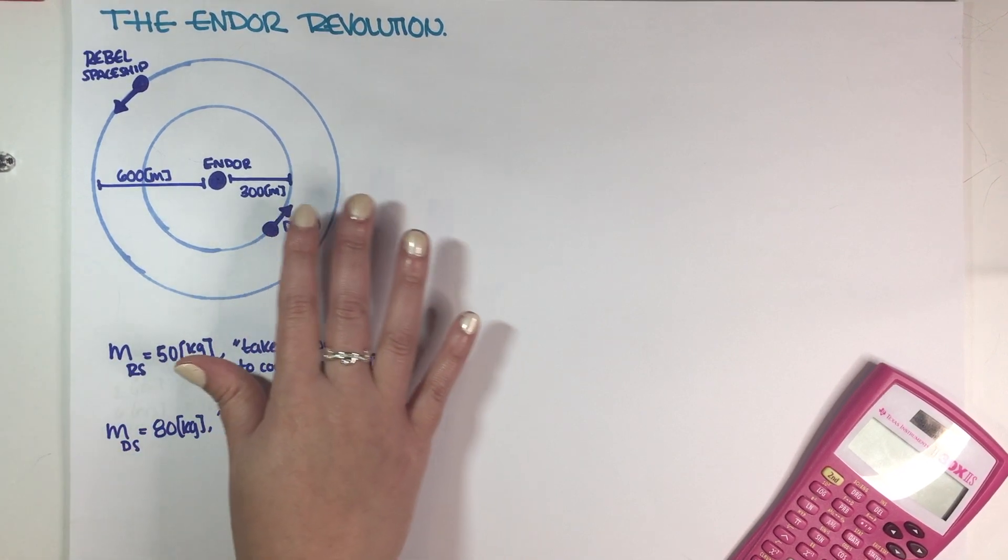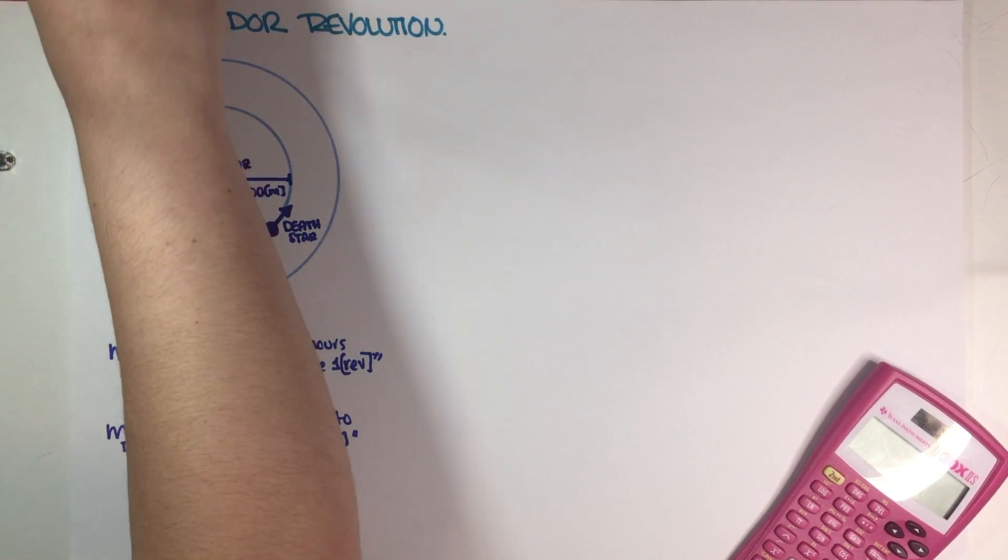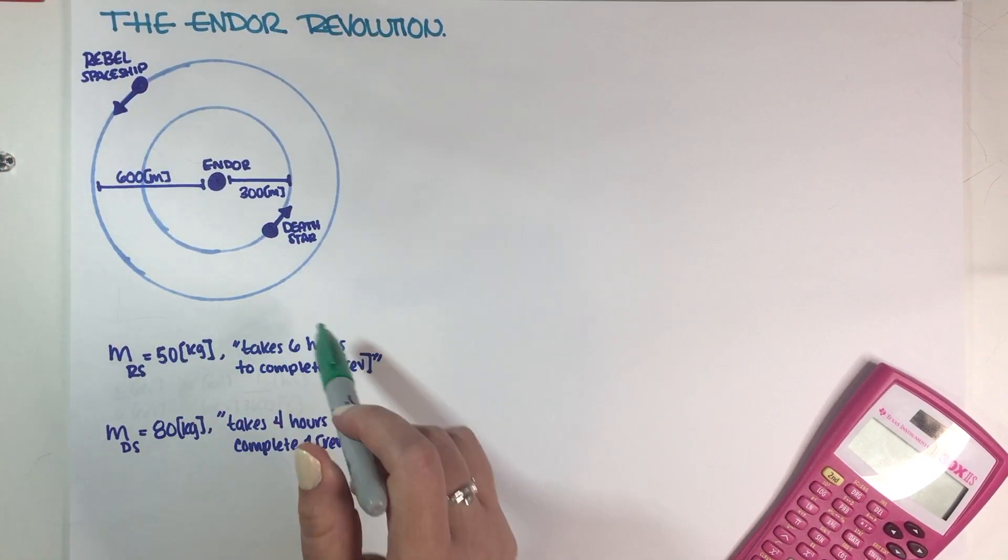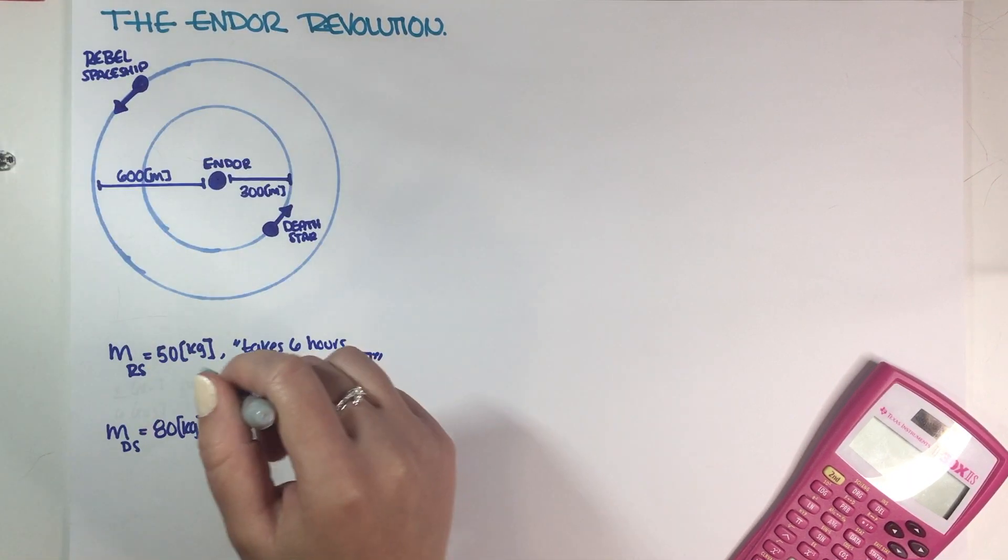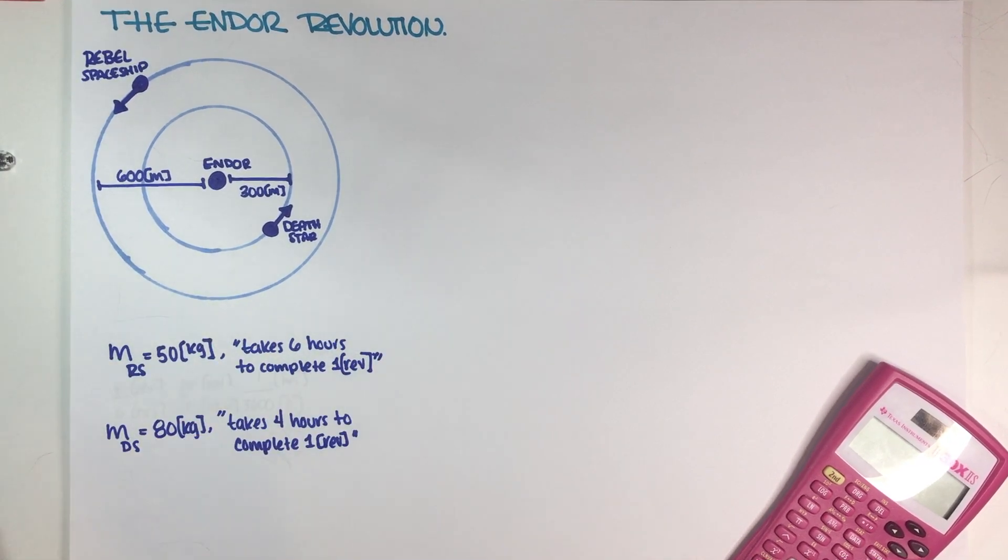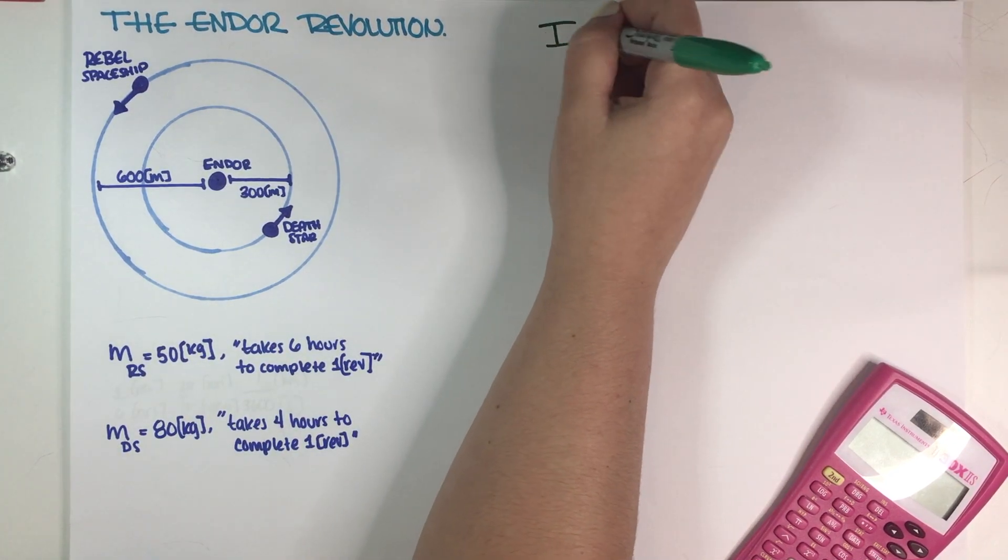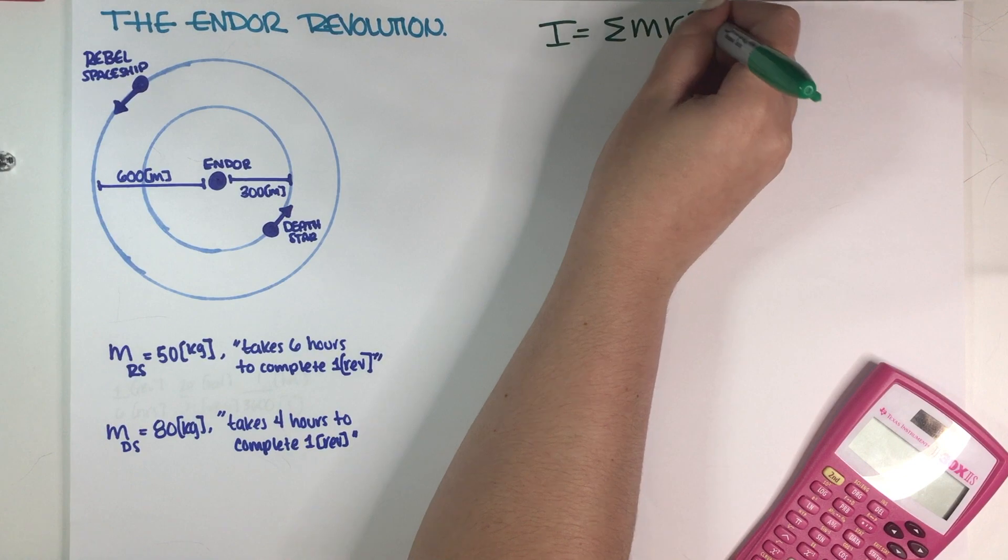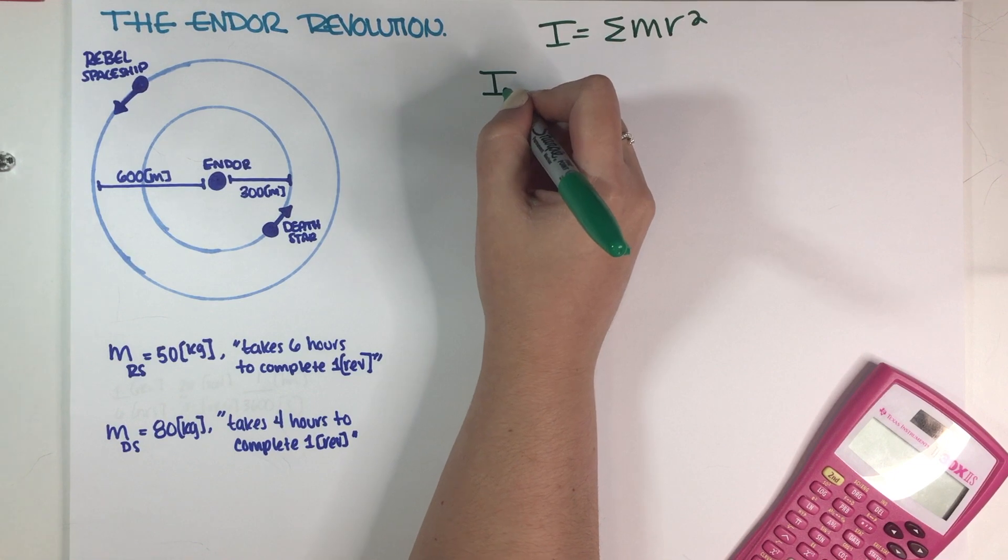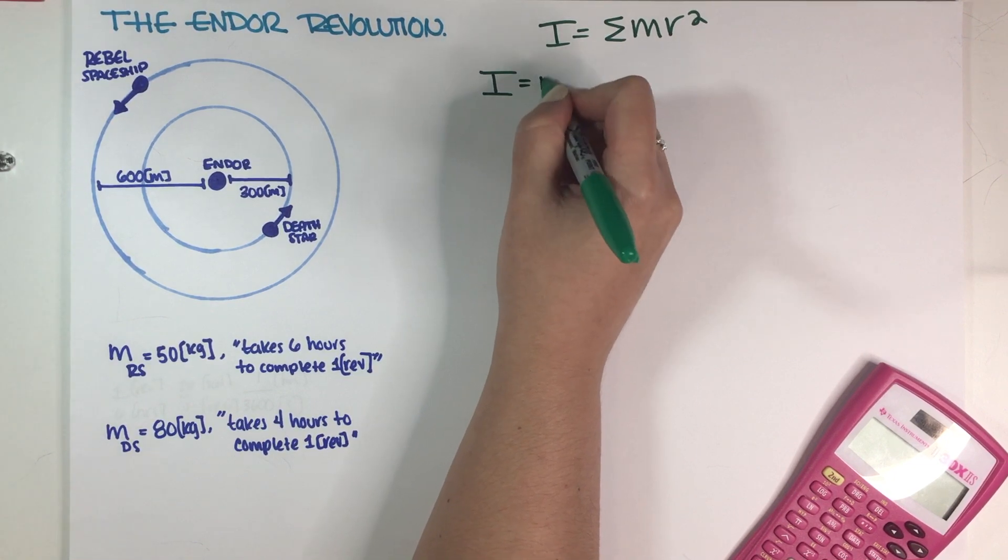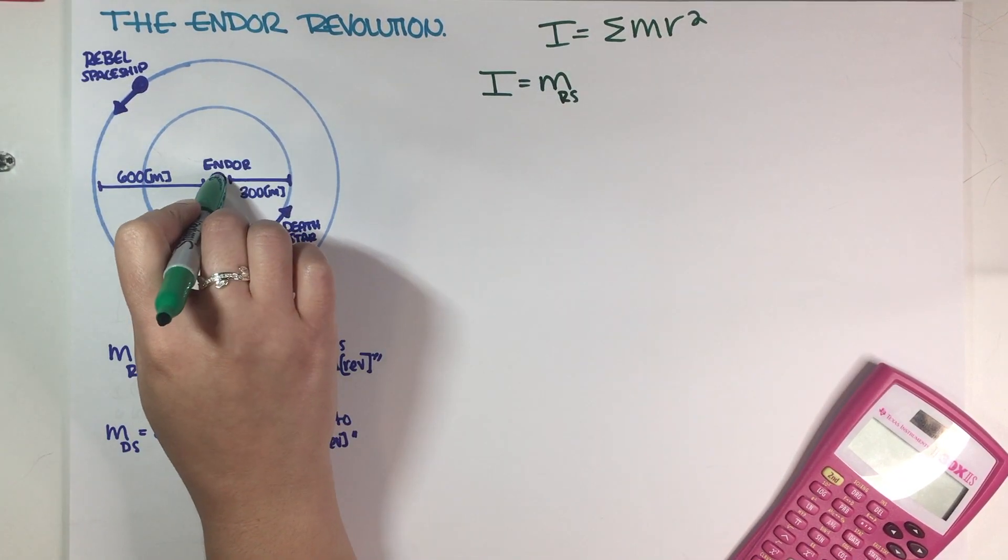The first part of the problem relates to only the Rebel spaceship. The Rebel spaceship has a mass of 50 kilograms and it takes six hours to complete one revolution. The first thing that we have to figure out is what is the Rebel spaceship moment of inertia. I'm going to write the equation for moment of inertia, which is MR squared.